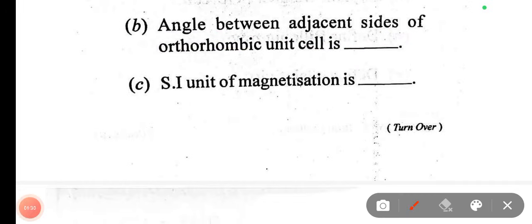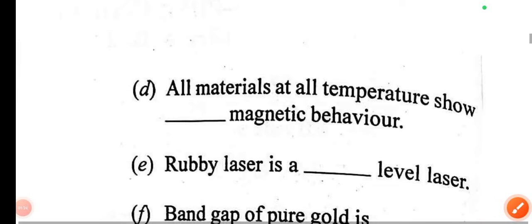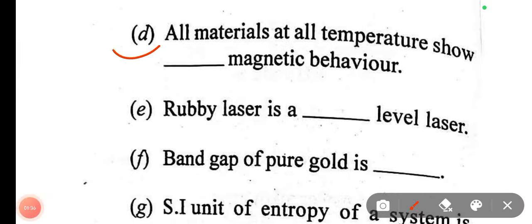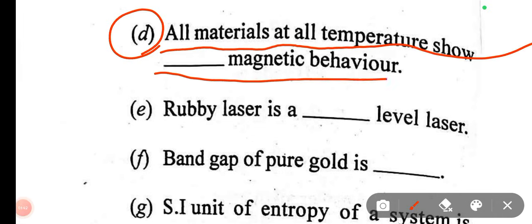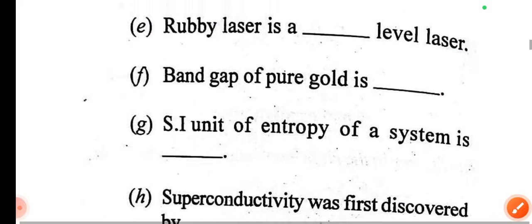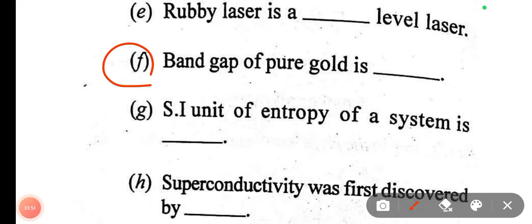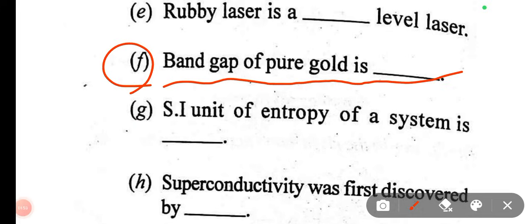SI unit of magnetization. All materials at all temperatures show diamagnetic behavior. Here, ruby laser is a three-level laser. Then, band gap of pure gold — pure gold is a conductor with zero band gap.